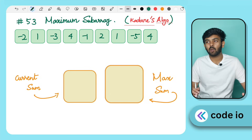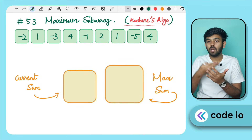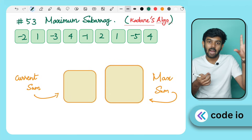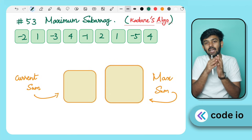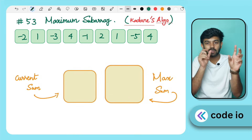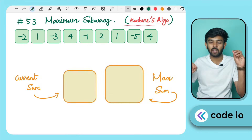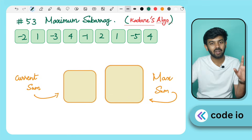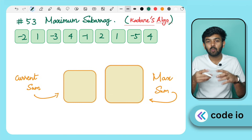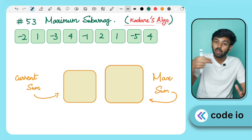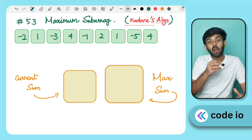If you have a brute force approach, you will use a nested loop to check all possible sub arrays. If you have an i loop and a j loop over all possible sub arrays, and you sum everything, that is an O(n) operation inside, making the overall complexity O(n³). That is not efficient.